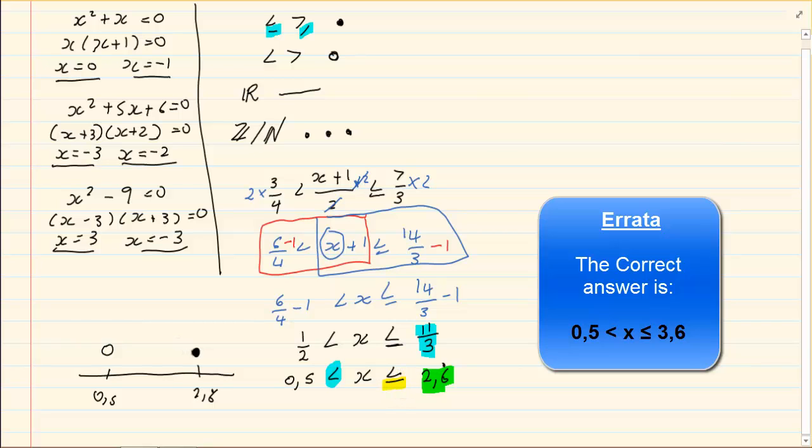Now it is a solid line because they didn't tell me if it is an integer or a natural number. Then we accept it as real numbers and it is a solid line.